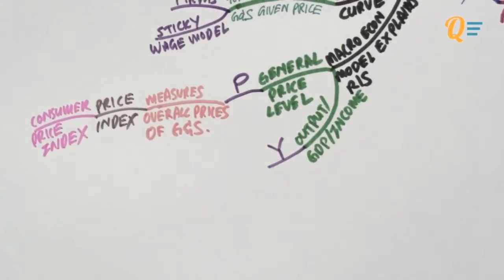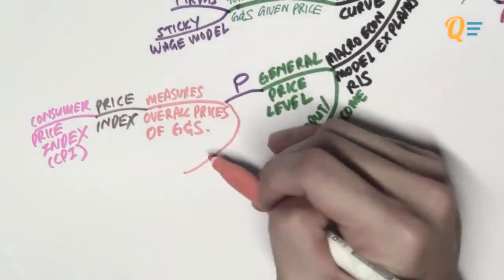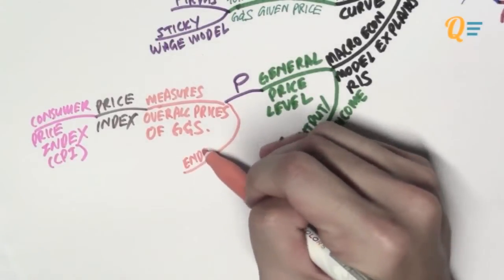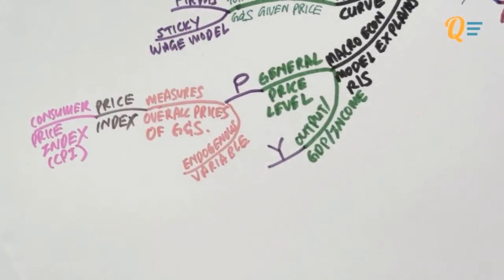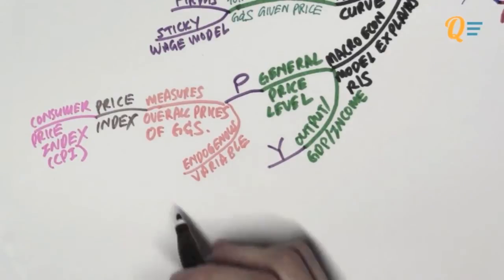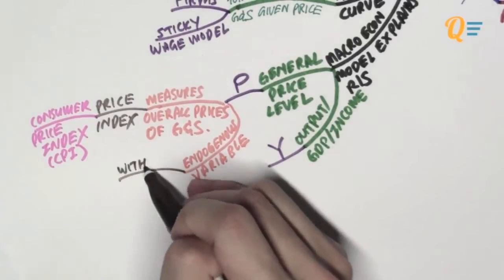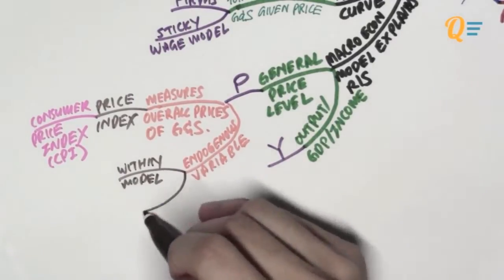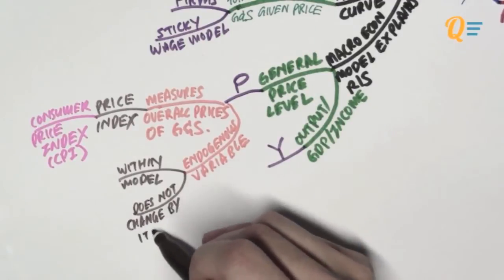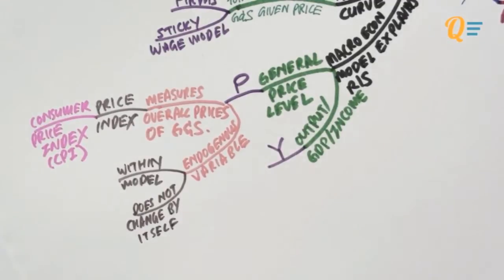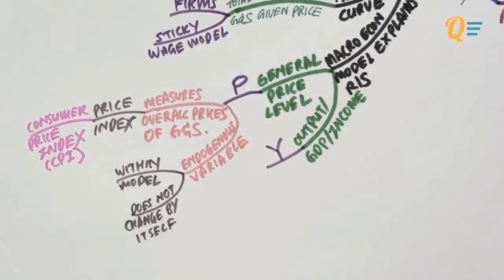More commonly, people use the consumer price index, or CPI for short. What you have to remember is that the price level is an endogenous variable, which means it is a variable that is within the model itself. Most importantly, the price level does not change by itself — it always changes because of some external factor.